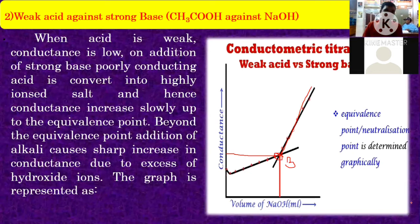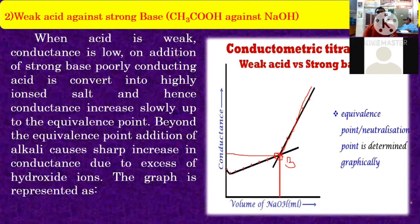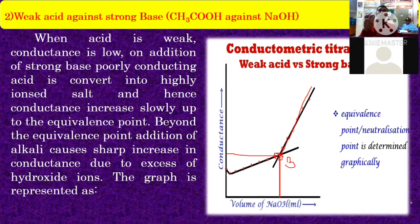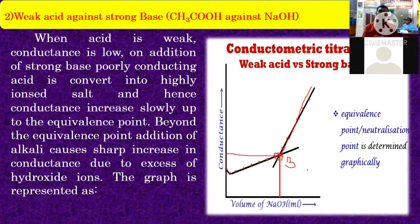When acid is weak, conductance is low because the dissociation of acetic acid is very low. On addition of strong base, the poorly conducting acid is converted into highly ionized salt, and hence conductance increases slowly up to the equivalence point. Adding NaOH to acetic acid solution causes formation of ions and conductance increases up to the equivalence point. Beyond the equivalence point, addition of alkali causes a sharp increase due to excess hydroxide ions in the electrolytic solution. This equivalence point can be calculated with the help of the graph — this is the conductometric titration for weak acid (CH₃COOH) against strong base (NaOH).